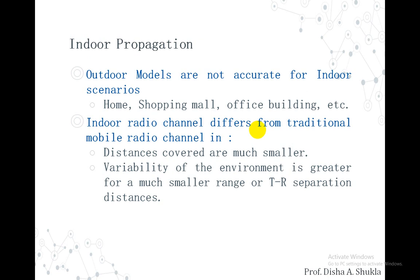The indoor radio channel differs from the traditional mobile radio channel in two aspects: the distances covered are much smaller, and the variability of the environment is greater for a much smaller range of transmitter and receiver separation distance. There is a large amount of variation in the environment inside a small range, as the separation between transmitter and receiver will be very small but the environment will be varying a lot.